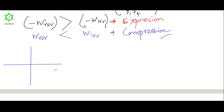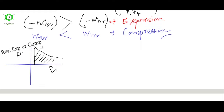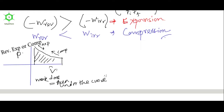Now we prove this through the PV diagram. For the reversible process, since there are infinite number of steps, the PV curve is continuous. The work done, whether for reversible expansion or compression, is always equal to the area under the PV curve.